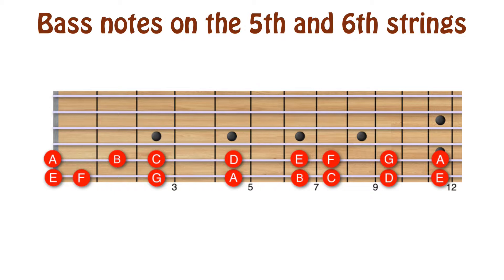The accidentals, sharps and flats, will obviously occur between the natural notes on each string. They were omitted on the chart for the sake of simplicity and clarity. If you know your natural notes, the accidentals are easy to find.